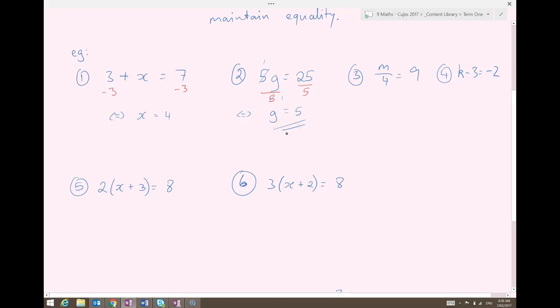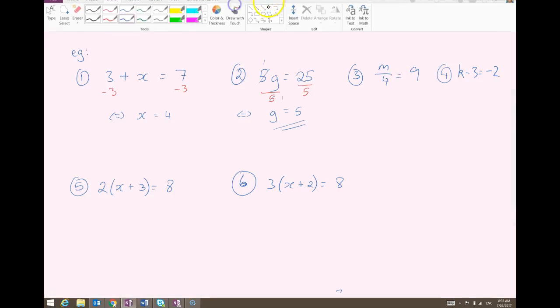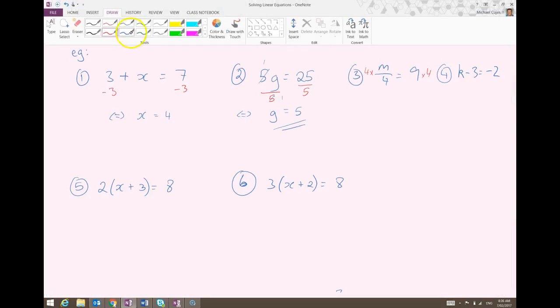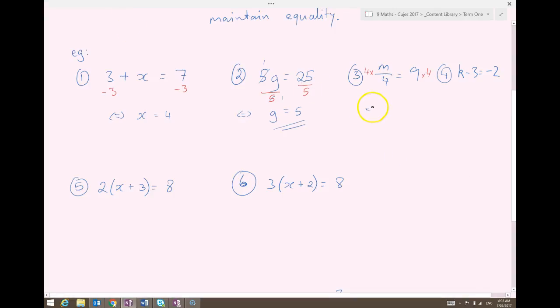The next one, m divided by 4 equals 9. The opposite of dividing by 4 is to multiply by 4. So I multiply each side by 4. Now on the left-hand side, I am just left with m. And on the right-hand side, 9 times 4 gives me 36.